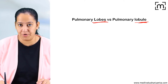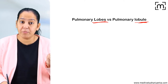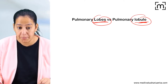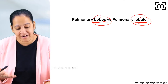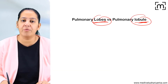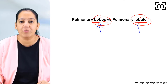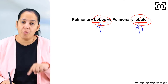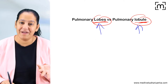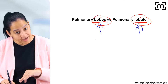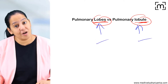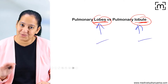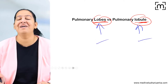Now let me give you the concept of lobe and lobule — what is a pulmonary lobe and what is a pulmonary lobule. Then you will understand the two types of pneumonia: lobar pneumonia and lobular pneumonia. In lobar pneumonia the lobes are involved, and in lobular pneumonia the lobules are involved. Lobular pneumonia is also known as bronchopneumonia.